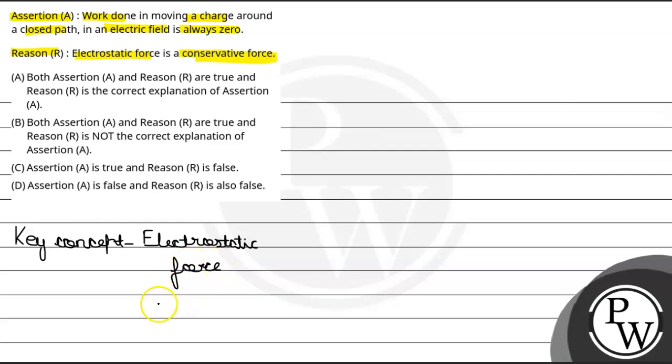Electrostatic force kya hota hai - agar hamare paas do charges hai, q1 aur q2, to in dono ke beech force of attraction lag raha hoga. Let's suppose ye dono d distance pe hai, to in dono ke beech force of attraction lag raha hoga. Us force ko hum likhte hai electrostatic force.